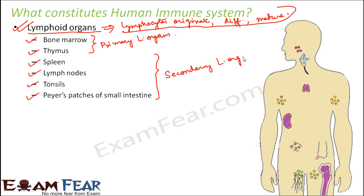The difference between primary and secondary lymphoid organs: primary lymphoid organs play the most important role in the development of lymphocytes — these are the organs where lymphocytes originate and differentiate. Secondary lymphoid organs are those which provide sites for interaction between the lymphocyte and the antigen. Lymphocytes get ready in the primary lymphoid organs, then go to the secondary lymphoid organs to interact with and attack the antigens.